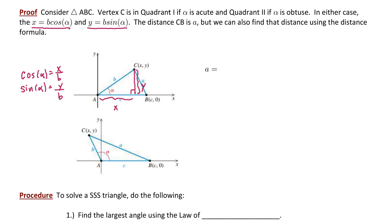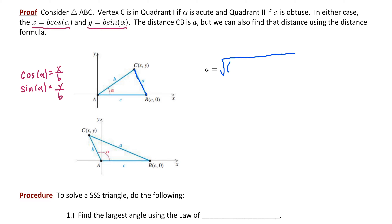Before we begin the proof, recognize that A, B, and C are the lengths of the sides of the triangle, and the ordered pair (X, Y) is the coordinates of point C. The distance CB is defined to be A because it's opposite angle alpha. But we can also find the length of segment CB using the distance formula, which gives the square root of the difference of the X values squared plus the difference of the Y values squared.